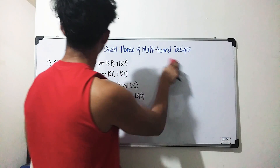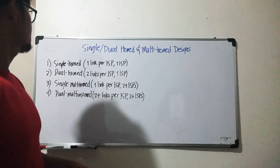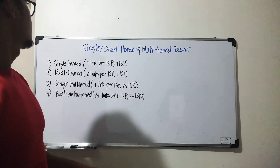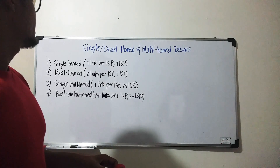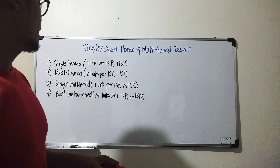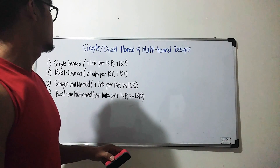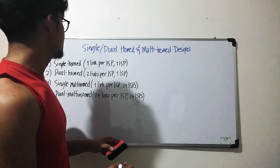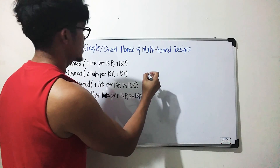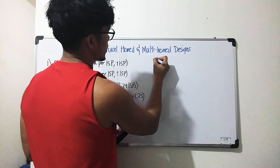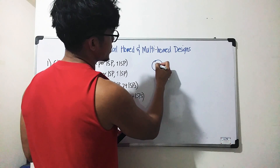Number two is dual-homed — basically we have two links that are connected to a single ISP. So an example of that would be: we have two links, so we could have a single enterprise router that has dual connections.